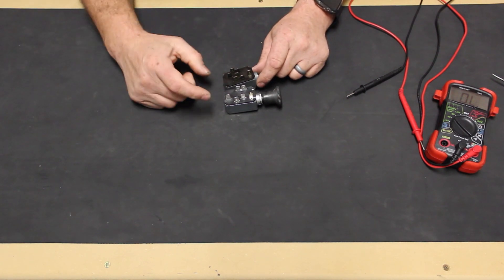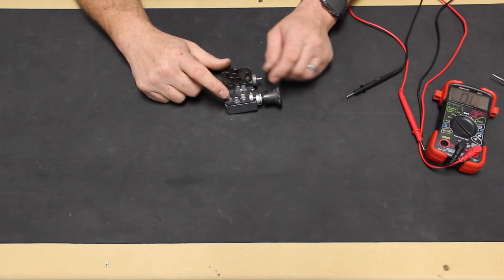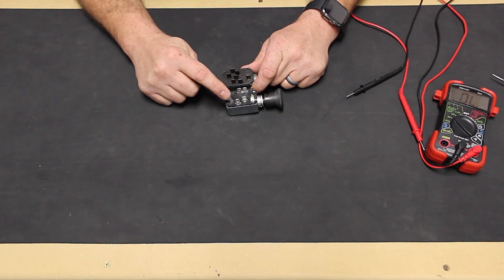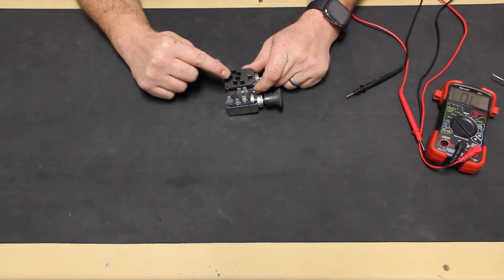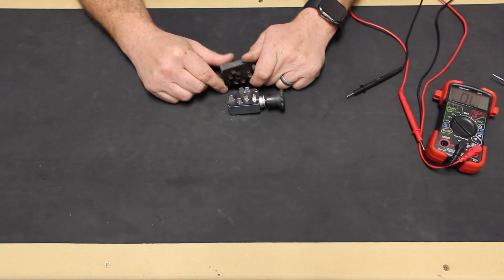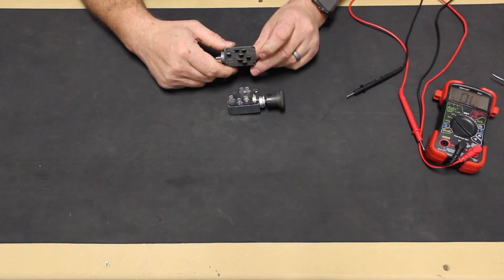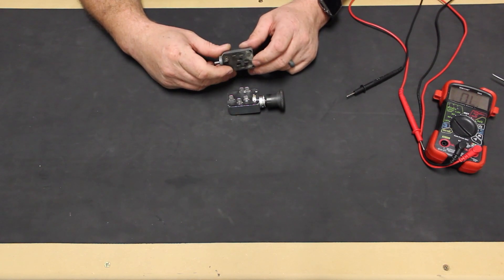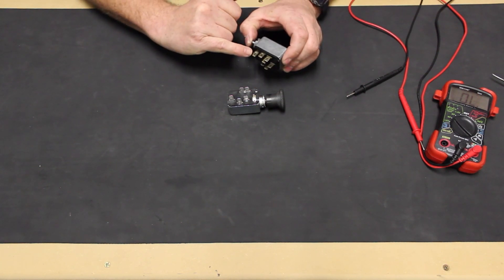Looking at the numbered terminals on the back of our switches, we can see that the new switch does not have a 57 terminal. This is fine as looking at the dirt and corrosion on our original switch, we can see there weren't any wires plugged into the 57 terminal, or the second 30 terminal for that matter. Keep in mind, a replacement switch may not have all the terminals that your original switch did, and the terminals won't always be in the same place.